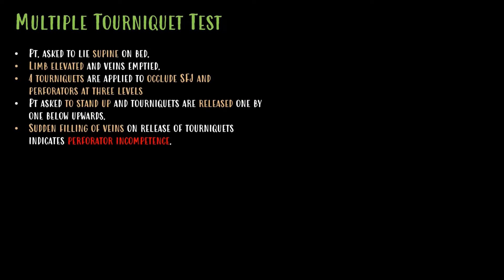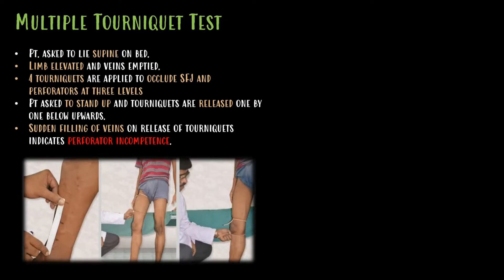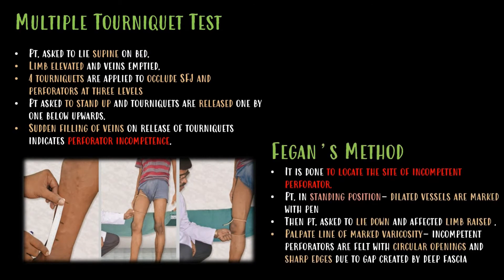In the multiple tourniquet test, the patient is asked to lie supine and the limb is elevated with veins emptied. Four tourniquets are applied to occlude the saphenofemoral junction and perforators at three levels. The patient is asked to stand up and the tourniquets are released one by one from below upwards. Sudden filling of veins on release of a tourniquet indicates perforator incompetence.